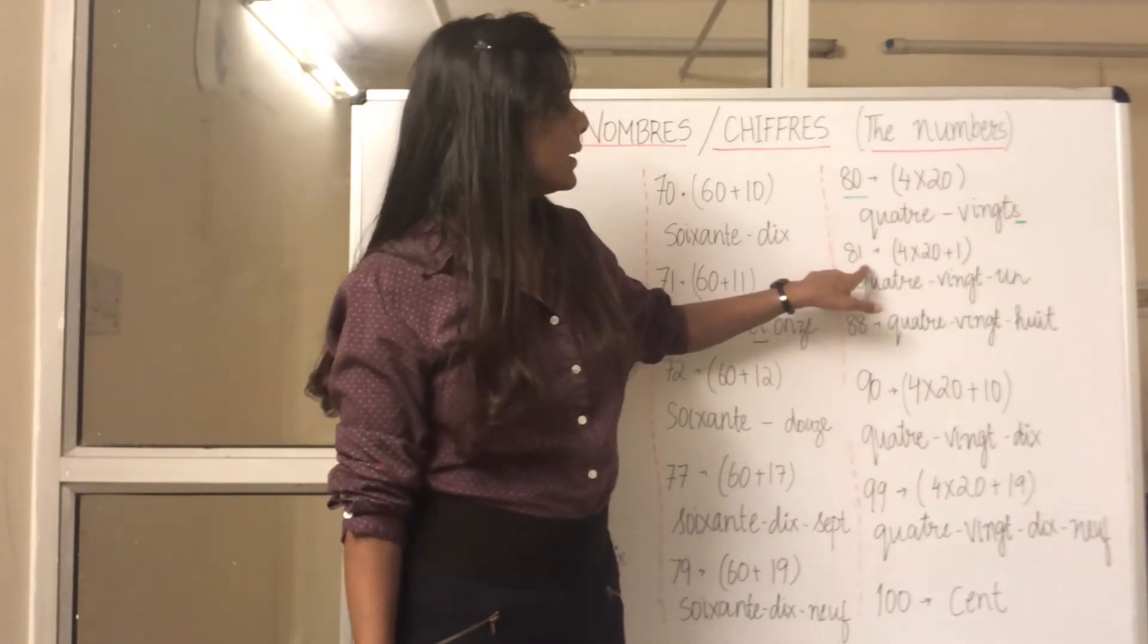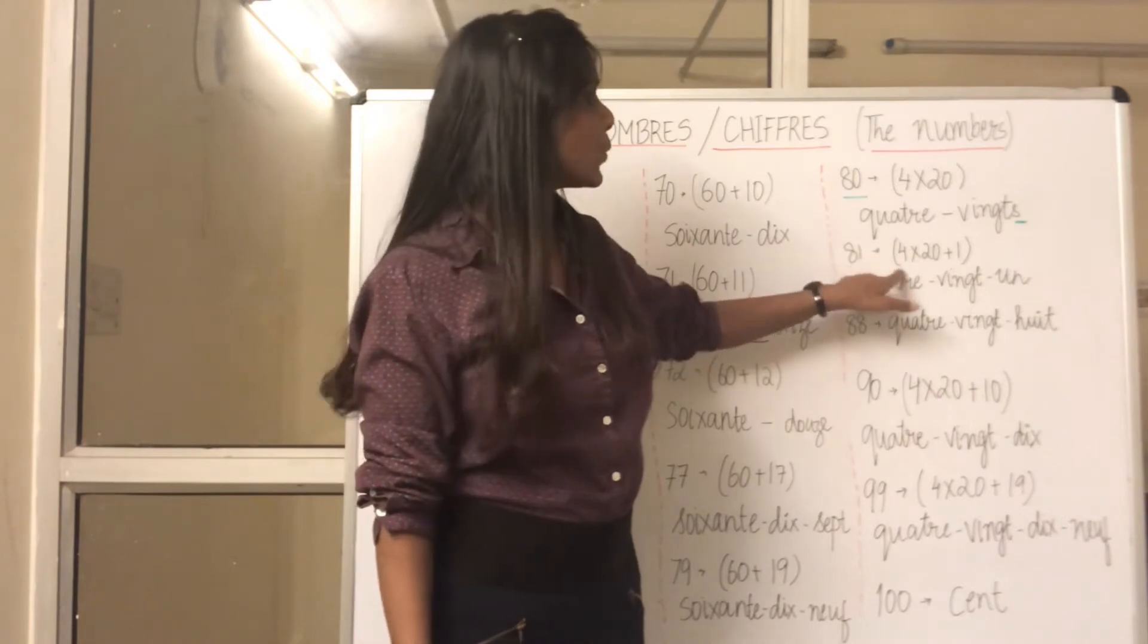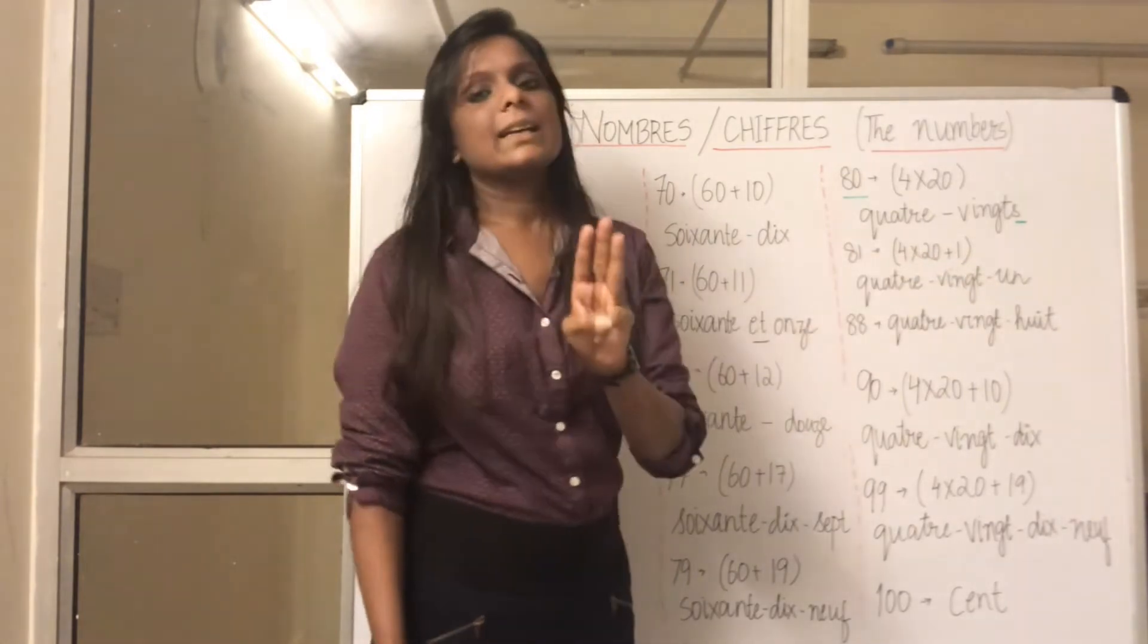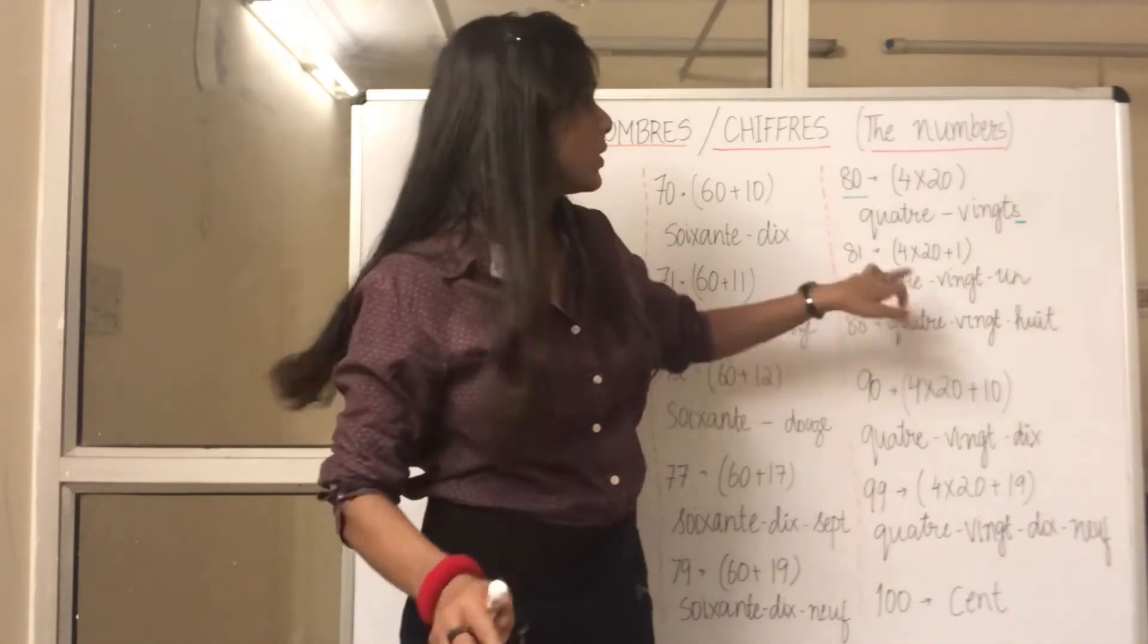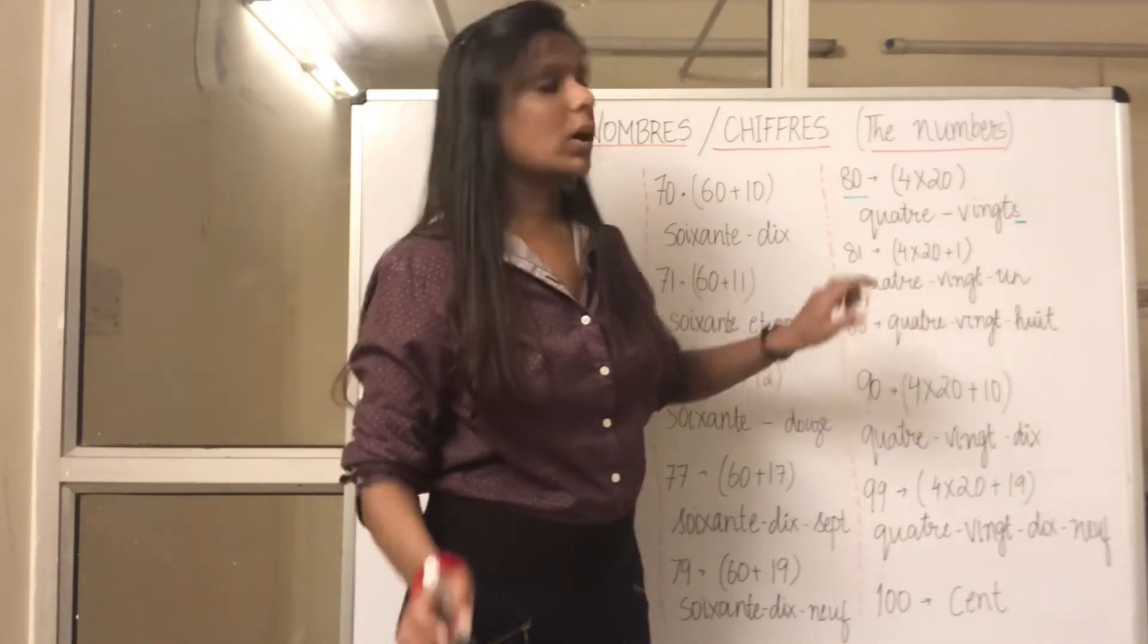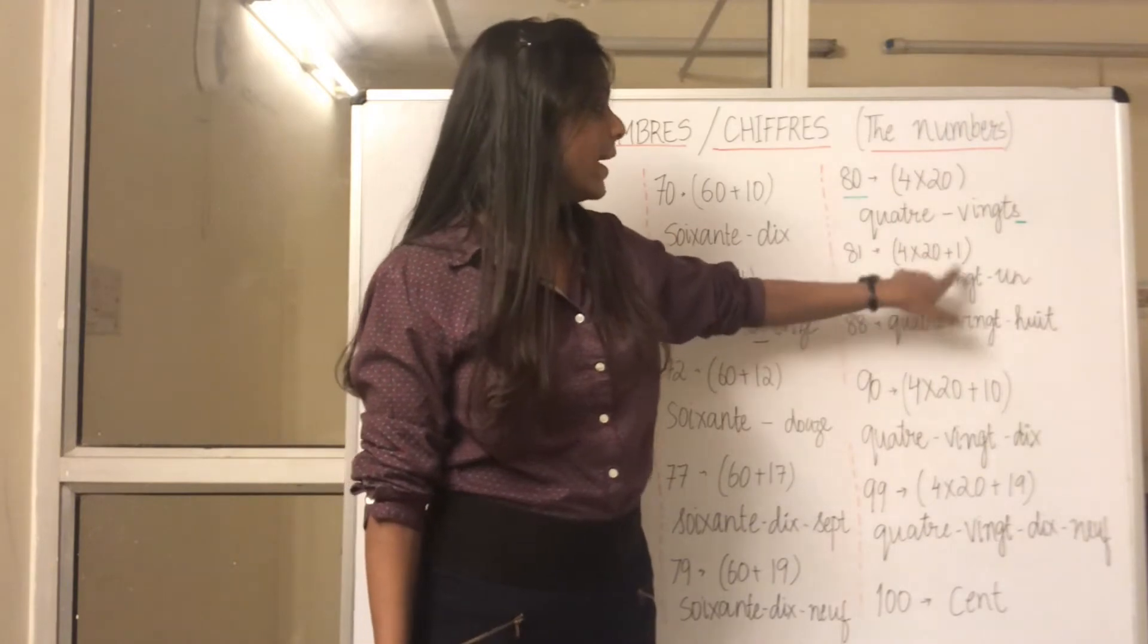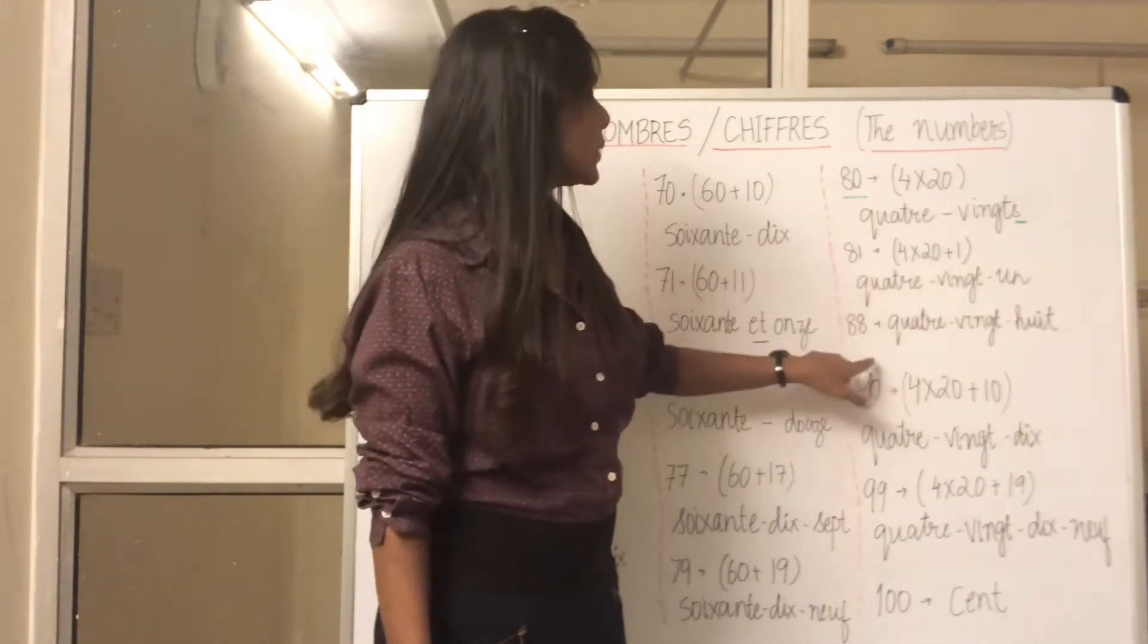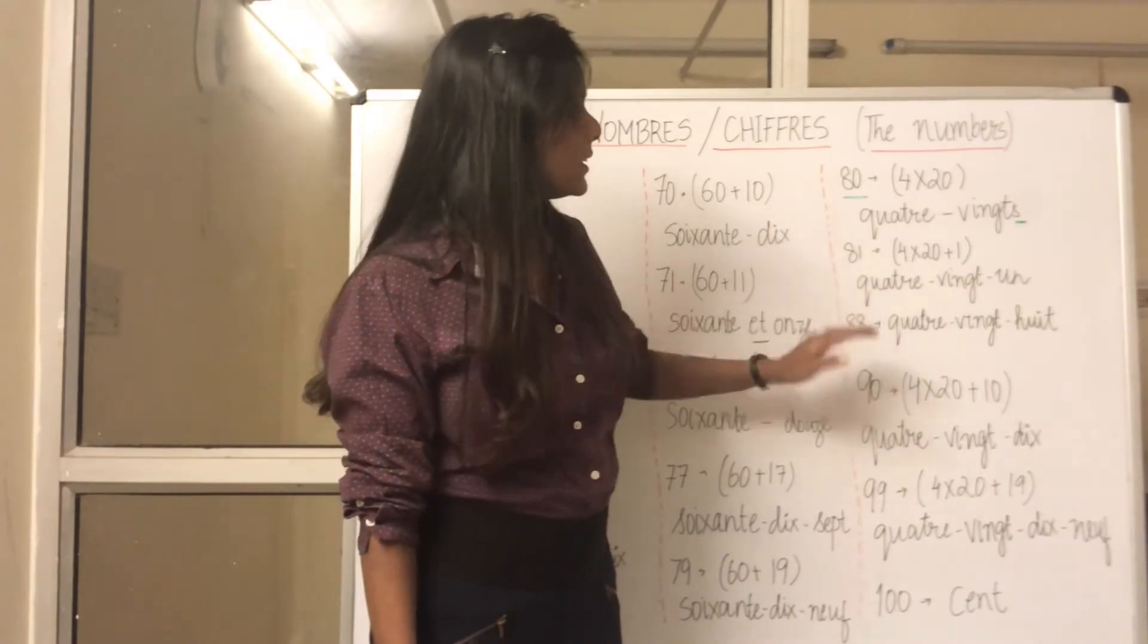So next comes 81. 81 is 4 multiplied by 20 plus 1, so it's a combination of three numbers: 4, 20, and 1. So what is 4? Quatre-vingt-un with a hyphen in between.